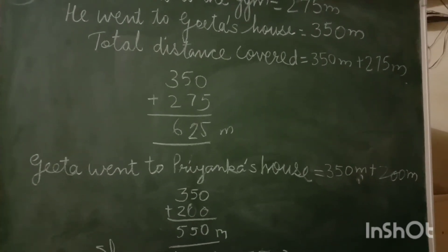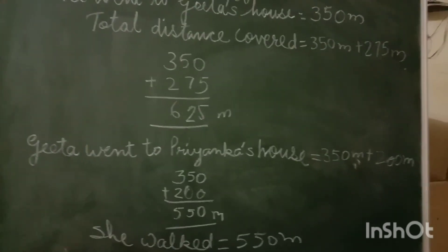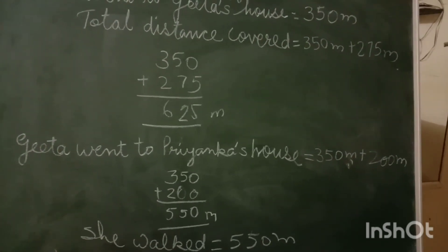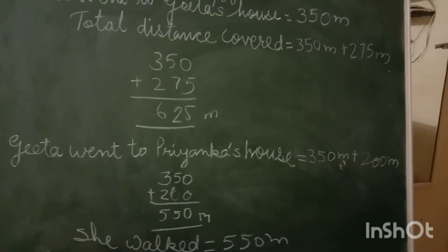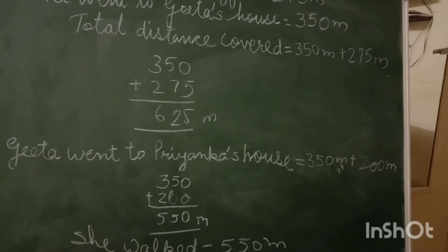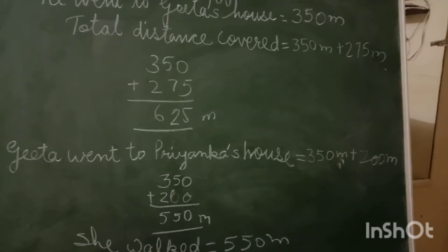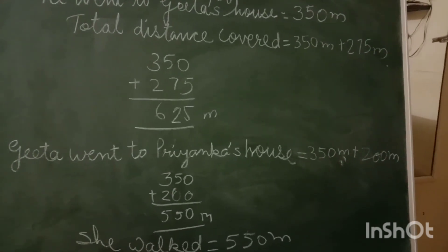Now second part is Geeta went to Priyanka's house. Again, both distances you have to add: 350 plus 200. So Geeta walked 550 meters. Now second part is who walked more? So how can you find out that? You have to find out by subtraction: 625 minus 550 meters.